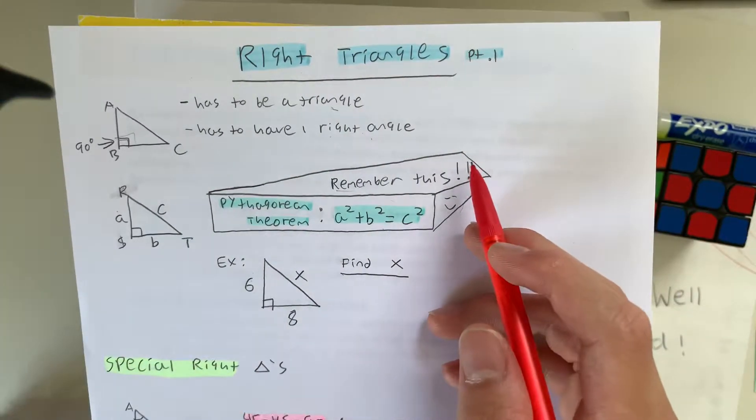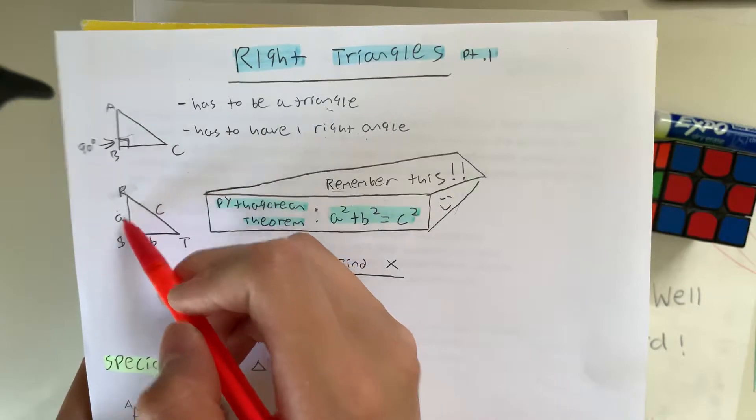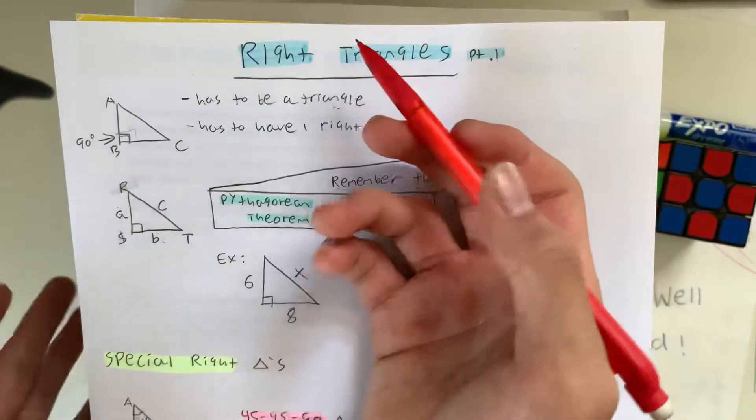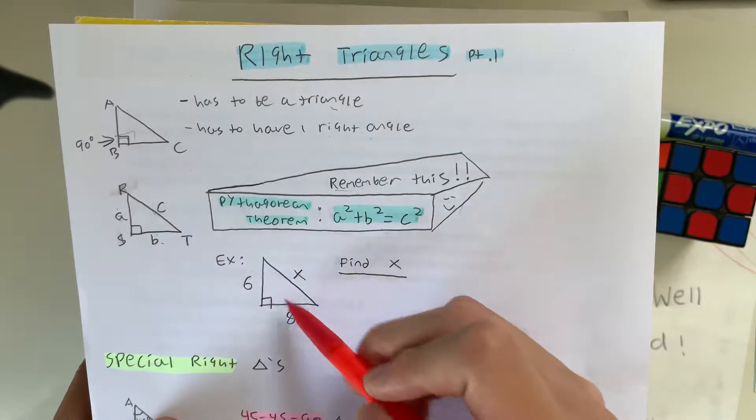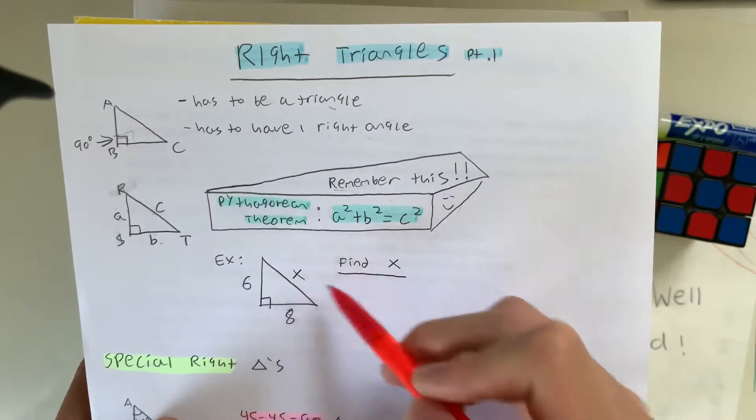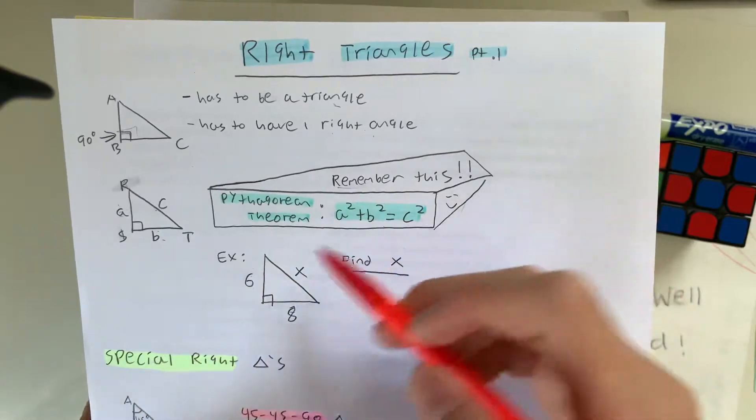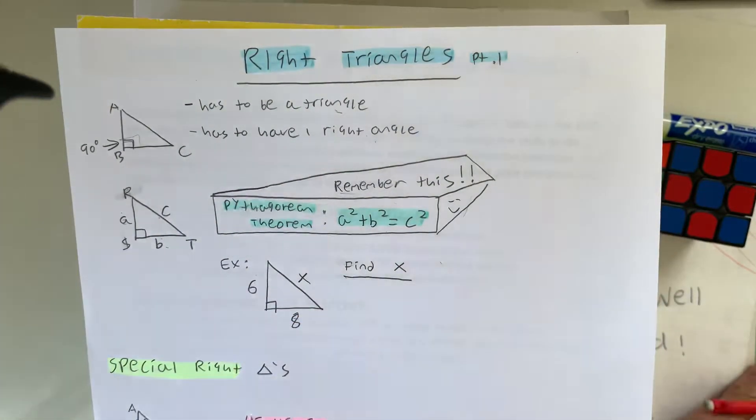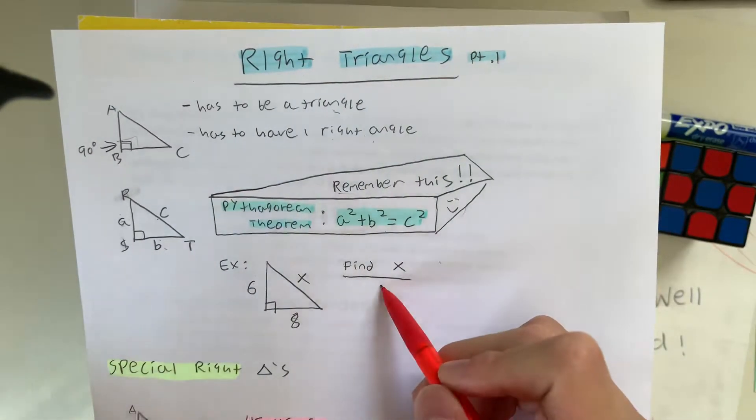So basically, how it works is you have side lengths of two sides of a triangle, and they ask you to calculate the third, as in this example right here. So you're asked to find x, but you don't know what x is. But you do have a right triangle. So this is where the Pythagorean Theorem is going to come into play. So basically, let me show you the example.